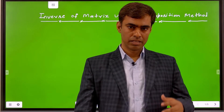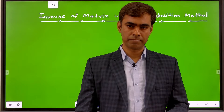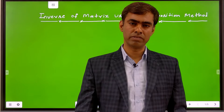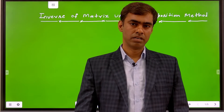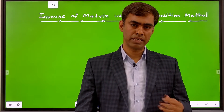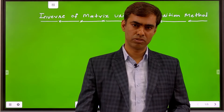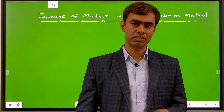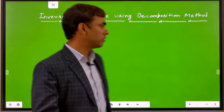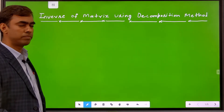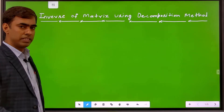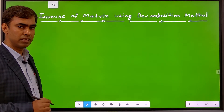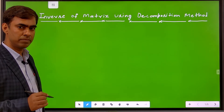First of all, we will give some theoretical aspects of these methods — how we find the inverse — and then we will solve a numerical example of how to find the inverse of a matrix using Doolittle's method. As we know, we are only able to find the inverse of any matrix if the matrix A is a non-singular matrix.